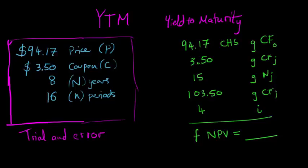I've got a bond with a price of $94.17. The coupon payment, the maturity is 8 years away. The coupons are $3.50 in 16 semiannual payments.